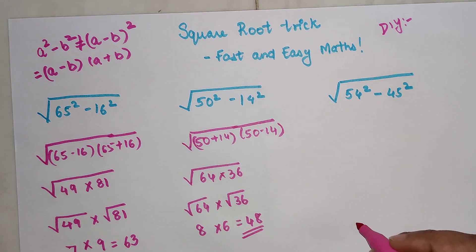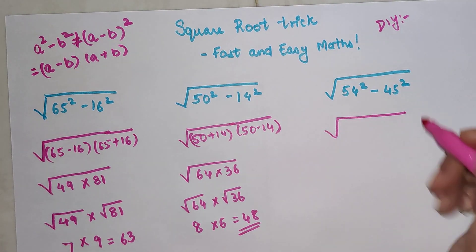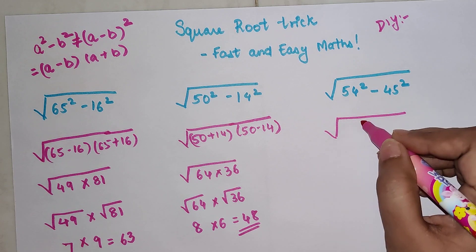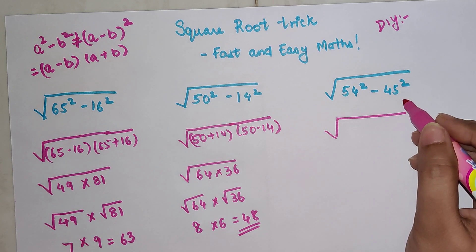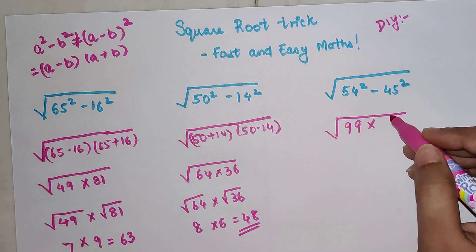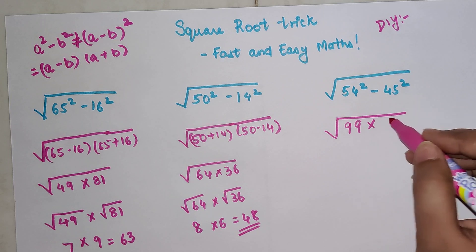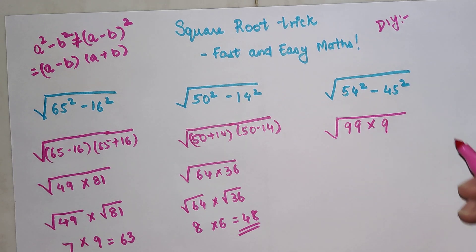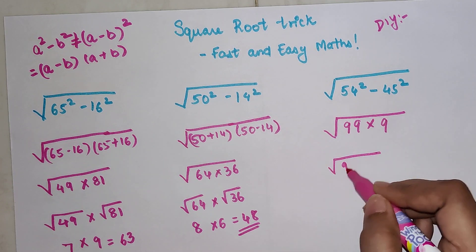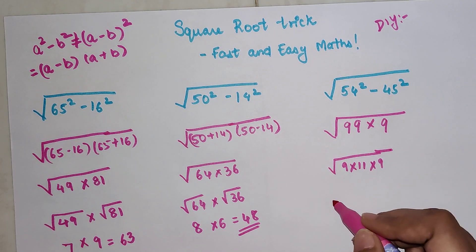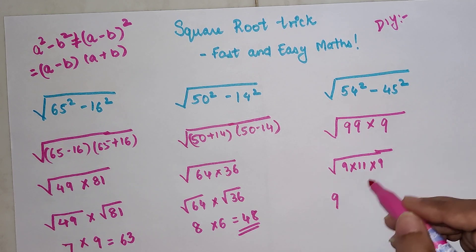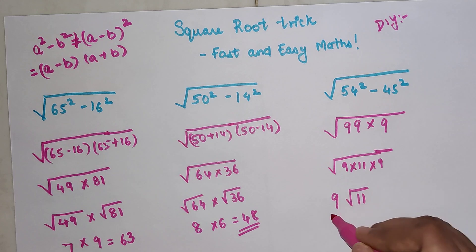Now for this one, let's do this orally. 54 plus 45 gets you 99, and 54 minus 45 gets you 9. This can be written as 9 times 11 times 9. Now 9 is repeated twice in our square root, so we take one 9 outside and the answer is 9√11.